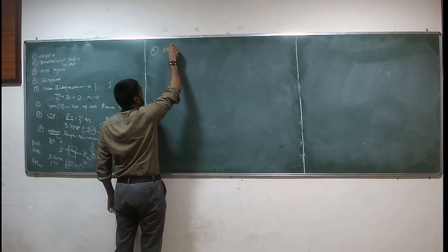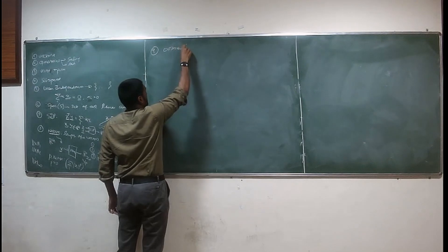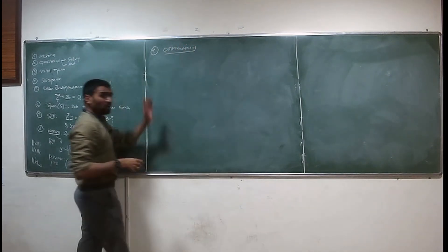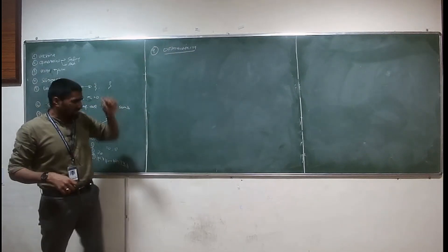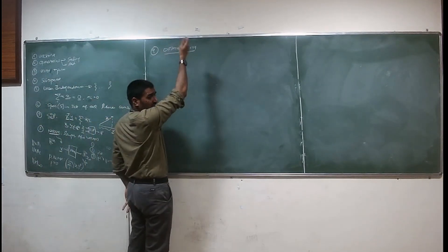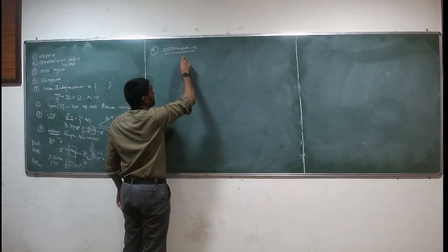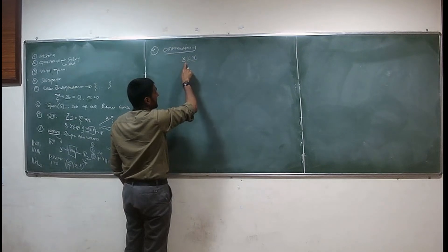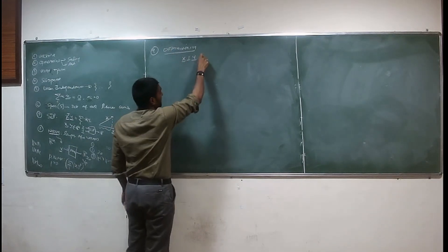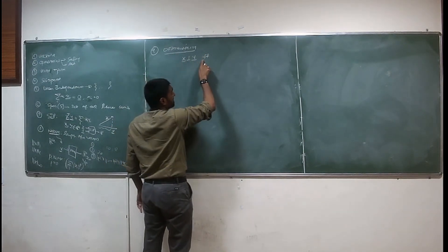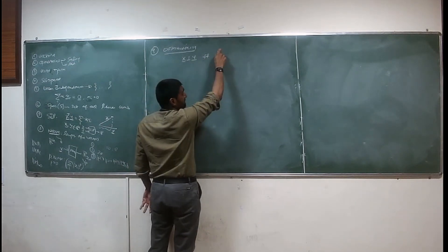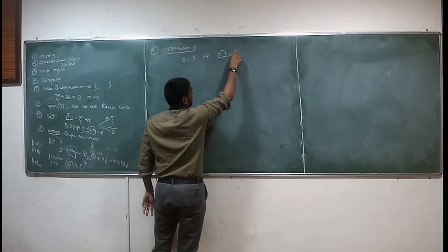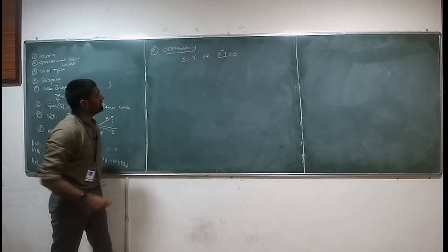What is orthogonality? It is the property of two vectors being perpendicular to each other. You have two vectors x and y — you say they are orthogonal to each other, written x ⊥ y, if and only if the standard inner product is zero.